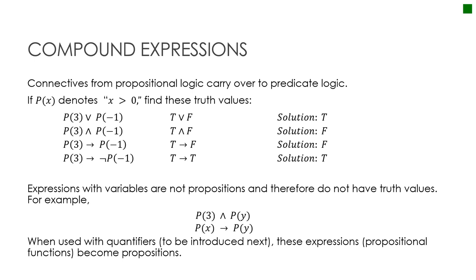The connectives — disjunctions, conjunctions, etc. — from propositional logic carry over to predicate logic. If p of x denotes 'x is greater than 0,' I can find truth values as before. p of 3 is true, p of negative 1 is false. Looking at an OR expression, the result is true. Expressions with variables are not propositions and don't have truth values unless we plug in specific values or use quantifiers.